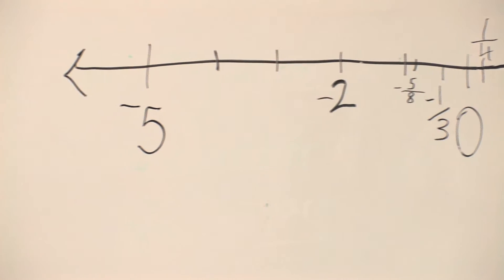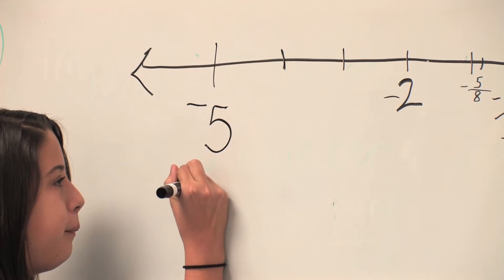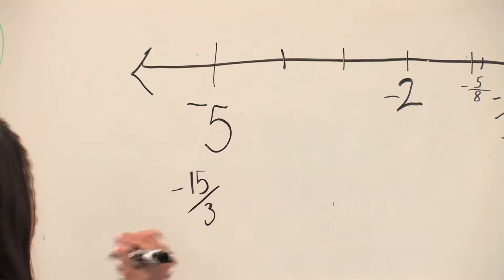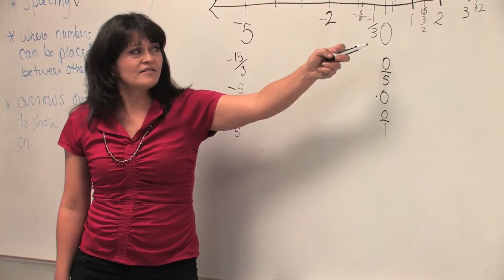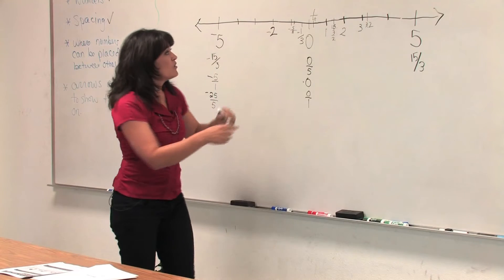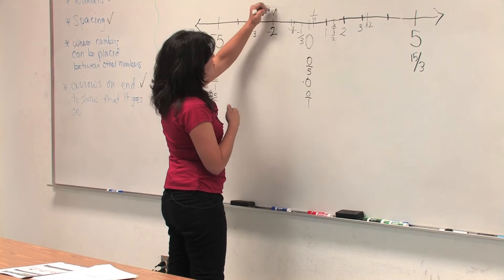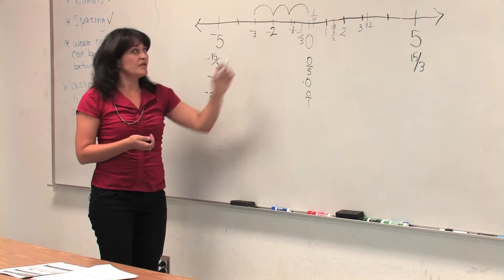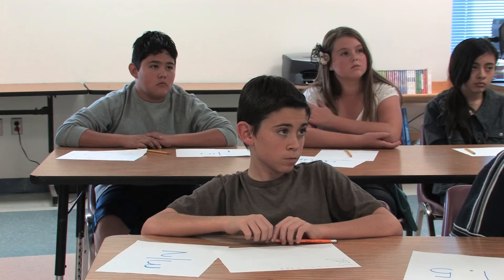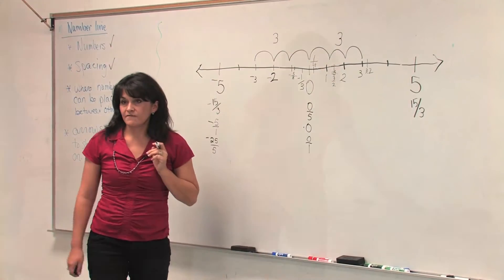Can you write an equivalent number for negative five? Negative fifteen thirds. Is zero any different than all of these other numbers? What is special about zero? It divides the number line between the positives and the negative numbers. If I look at the distance — from three and negative three — how many units is negative three away from zero? Three. How many units is positive three away from zero? Three. Pretty cool.